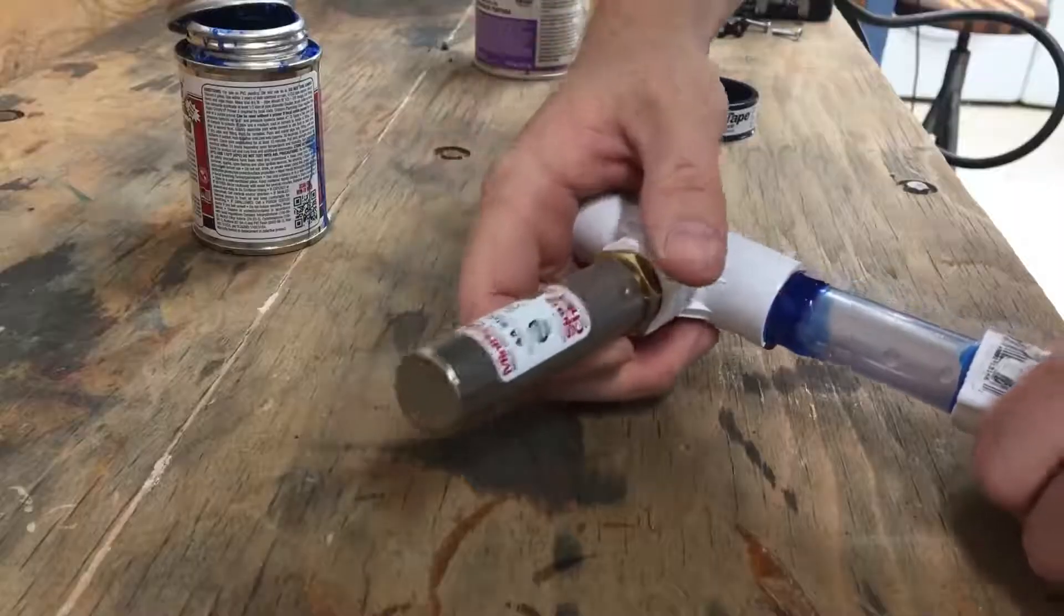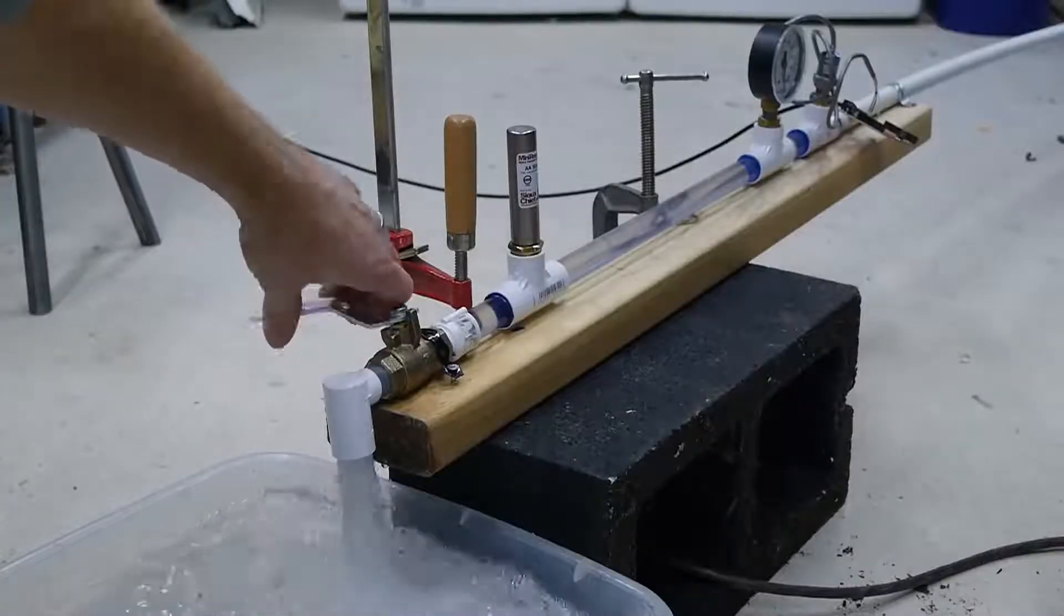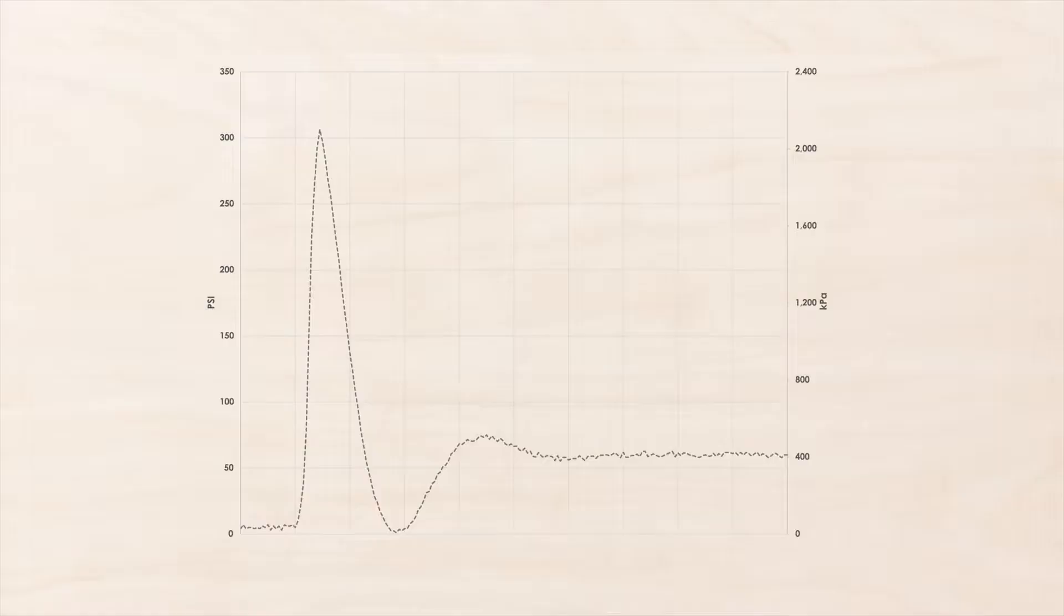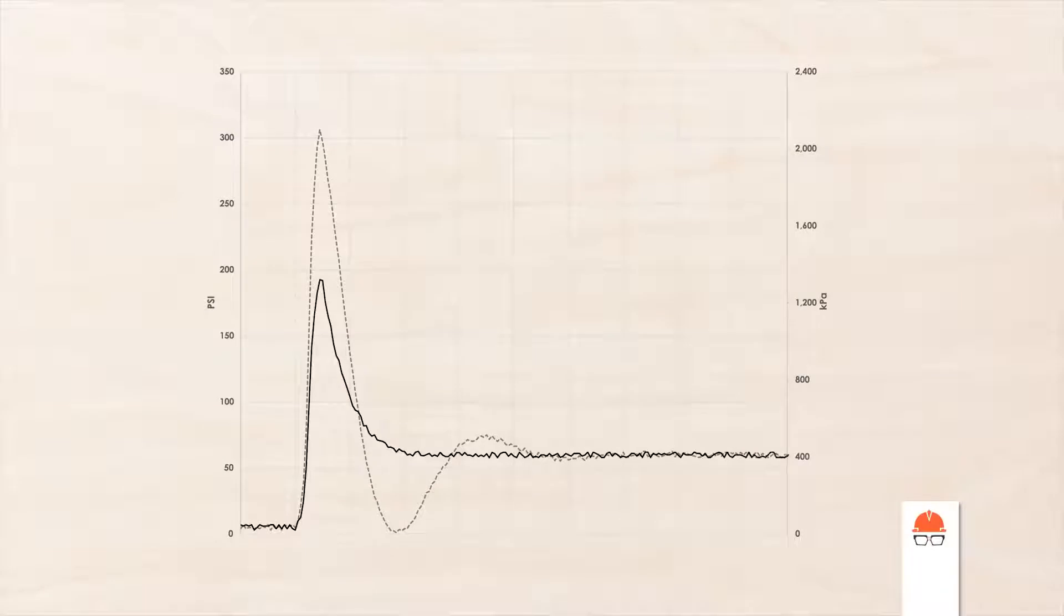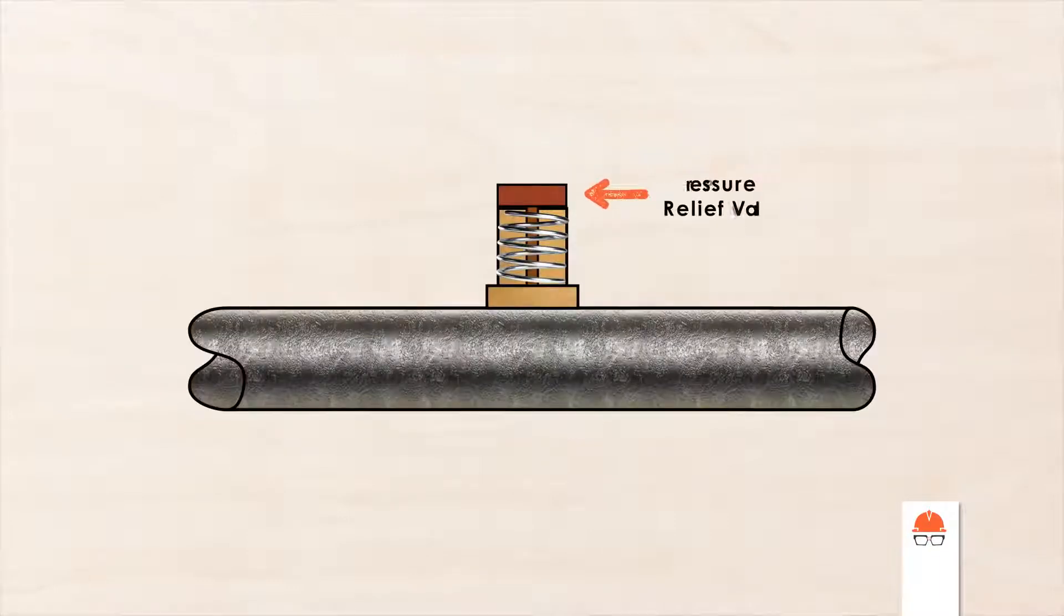I can increase the flexibility even more by adding an anti-surge device. This has an air bladder that can absorb some of the shock and reduce the pressure spike even further. Anti-surge devices are very common in pipe systems, and they can be as simple as spring-loaded valves that open up if the pressure gets too high.